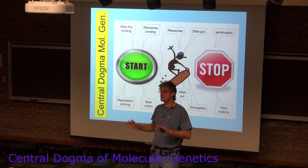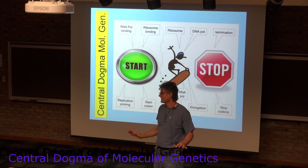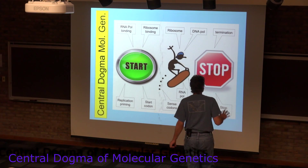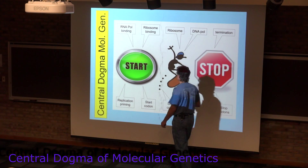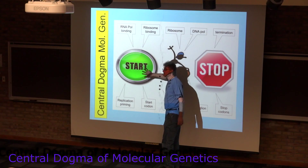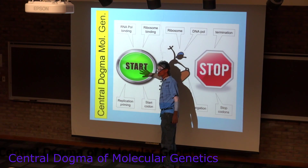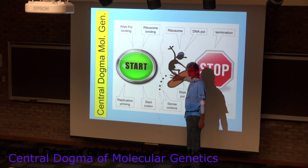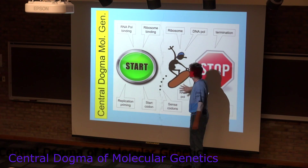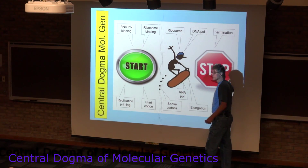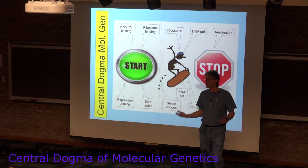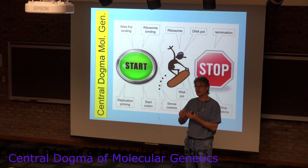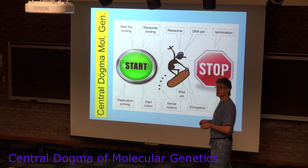If all of that seems overwhelming, that's because it is — it's very complicated. But although the details differ, each one has some process by which it starts, some process by which polymerization occurs, and some process by which the polymerization stops. And you're either making DNA, making RNA, or making polypeptides.